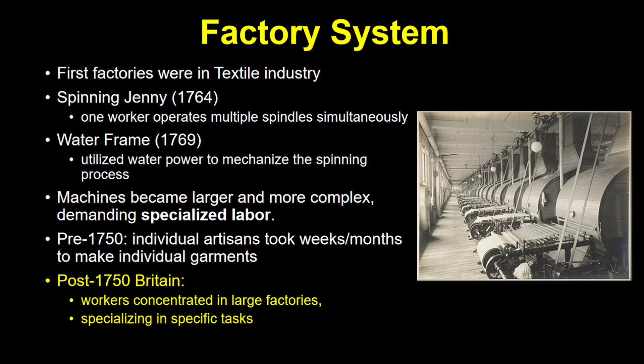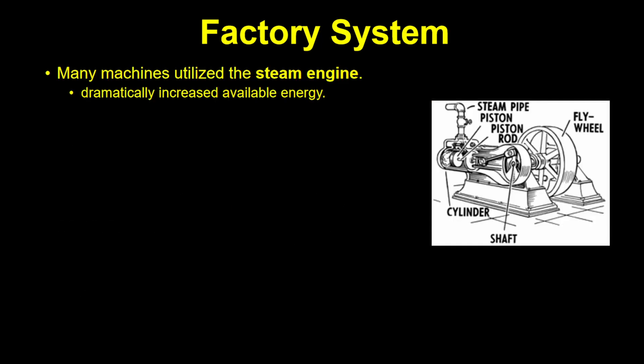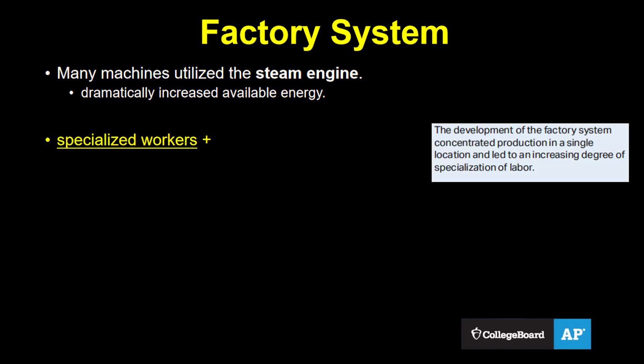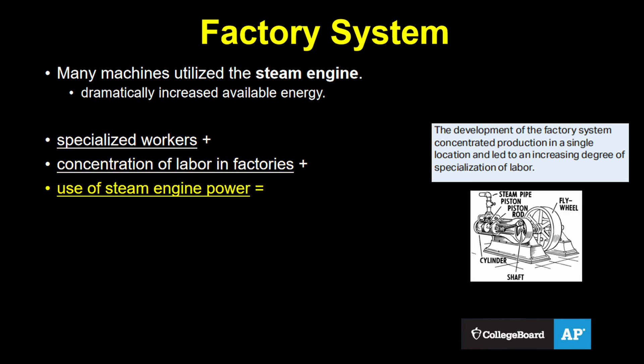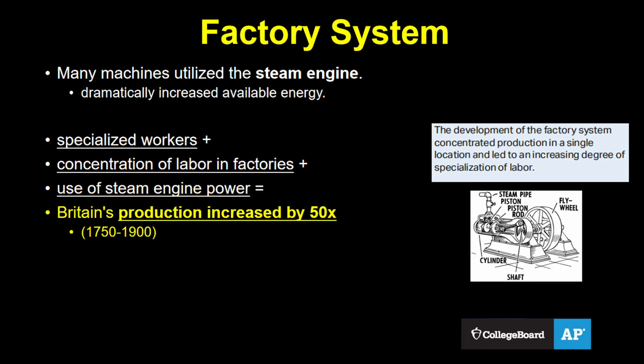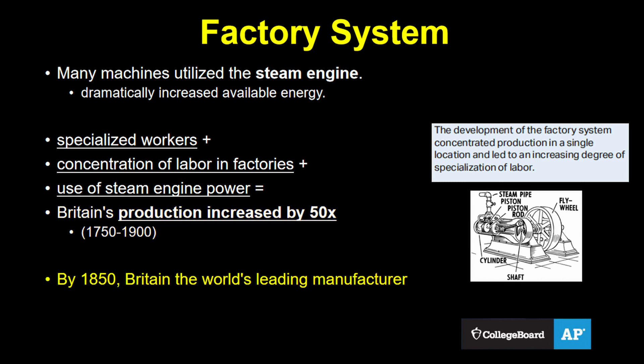Since before this, as we mentioned in Unit 4, manufactured products continued to be made by artisans. From this point forward, more and more products would be made in factories. Many of these machines made use of the steam engine, which increased the amount of energy available by orders of magnitude. The combination of specialized workers concentrated in a single location using steam-powered machines meant that Britain's production increased 50-fold and made this tiny island country the biggest manufacturer in the world by 1850.